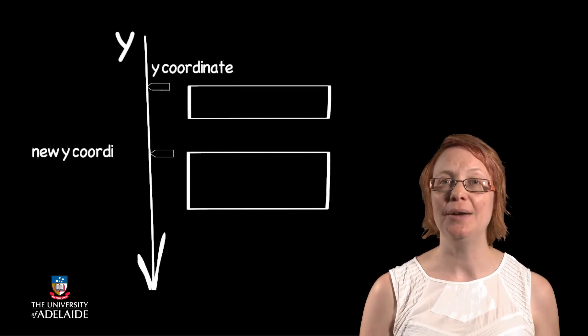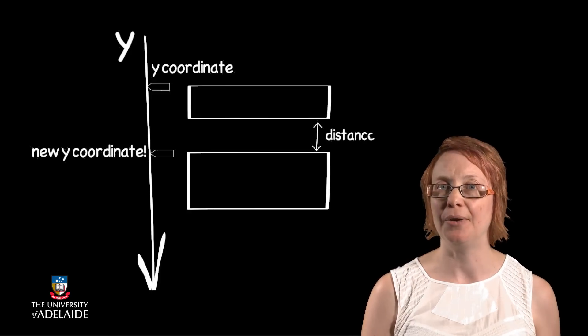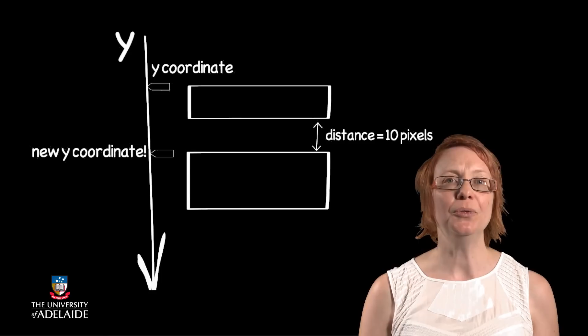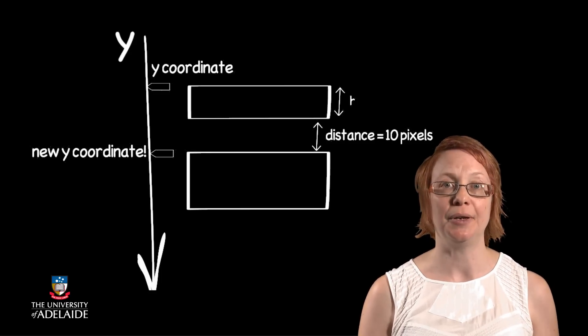We can calculate the new Y value by thinking about where we want it to be, and what data values we have in our program. We want the new rectangle to be 10 pixels below the first rectangle. This is the value of our distance variable.